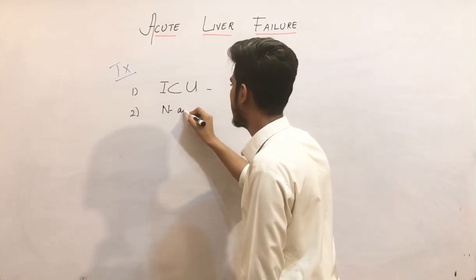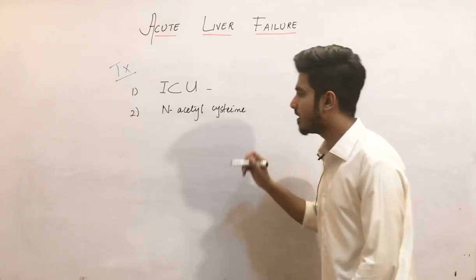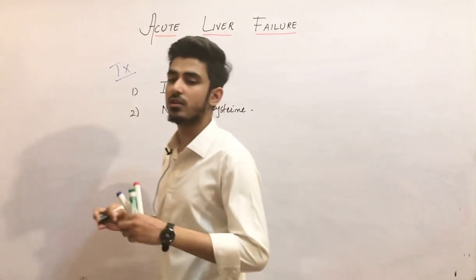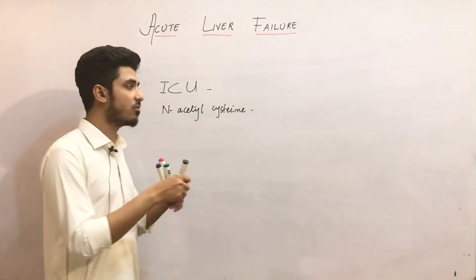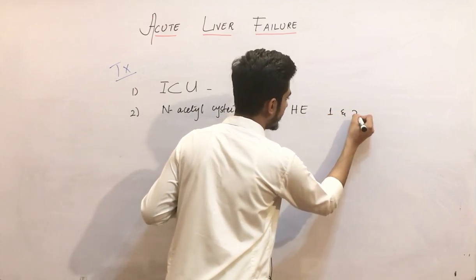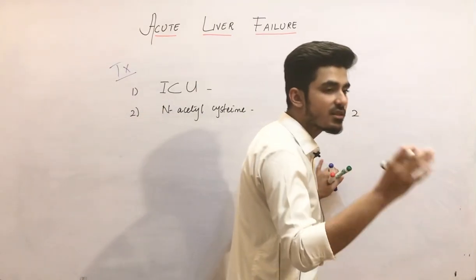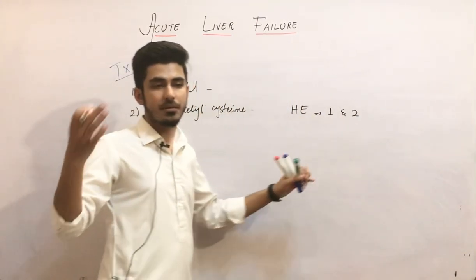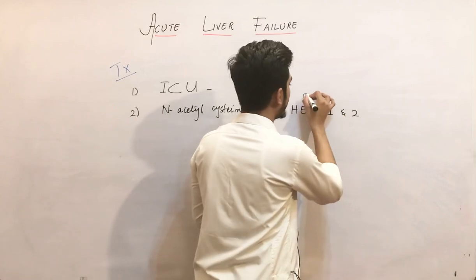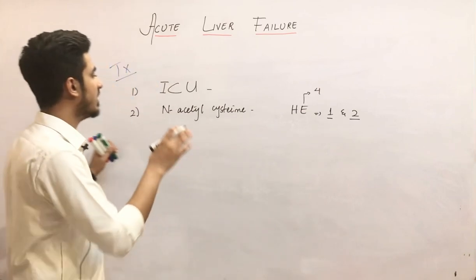The second thing you are going to give the patient is intravenous N-acetylcysteine. N-acetylcysteine is given to almost all patients of acute liver injury and to patients with hepatic encephalopathy grade one and two. There are four grades of hepatic encephalopathy, which will be discussed separately. In grade one and grade two, we give N-acetylcysteine.